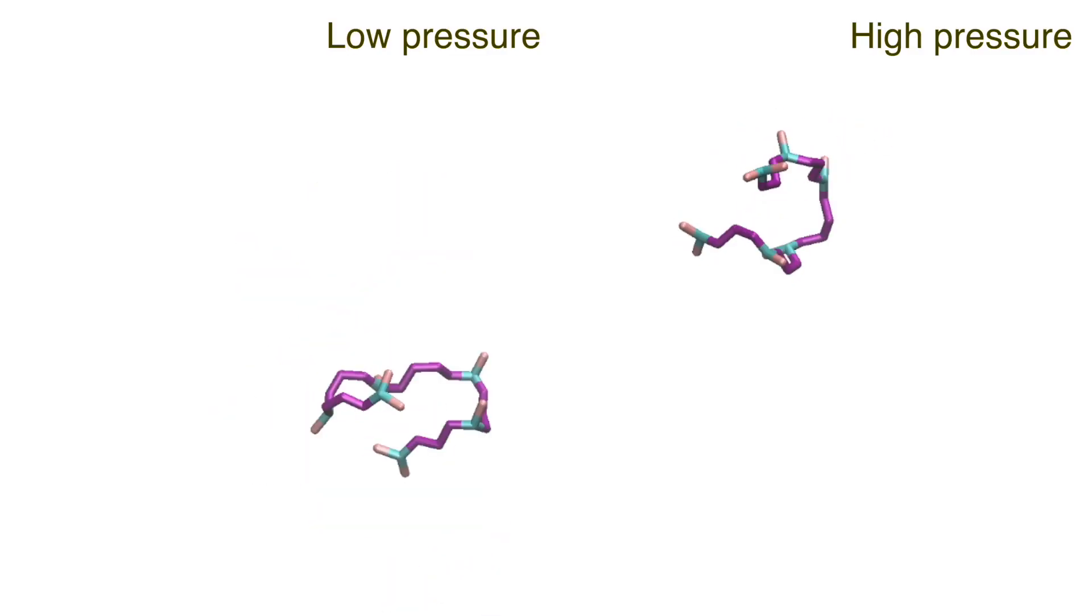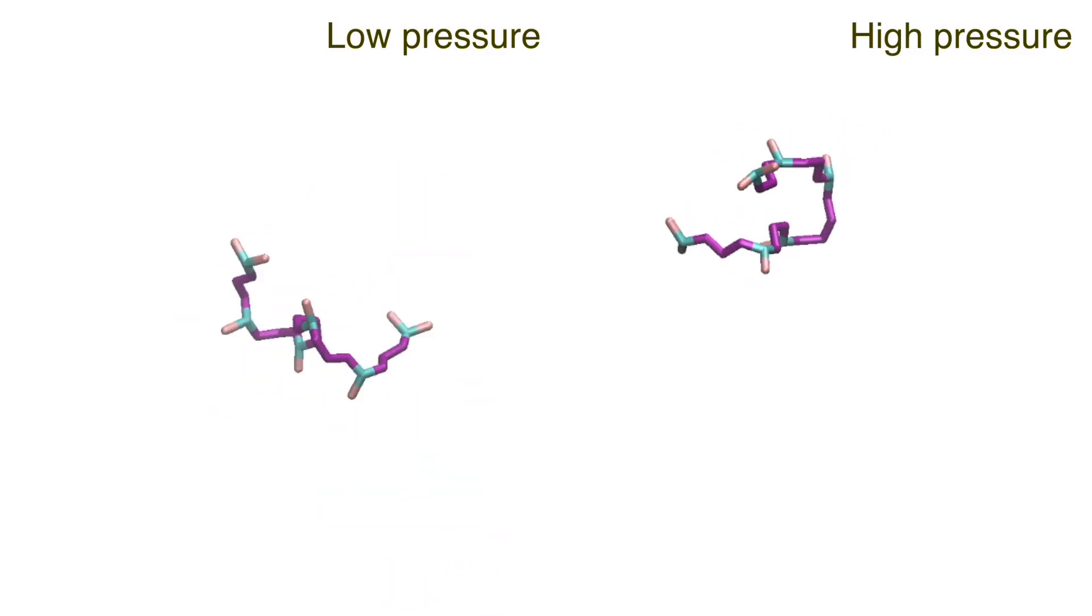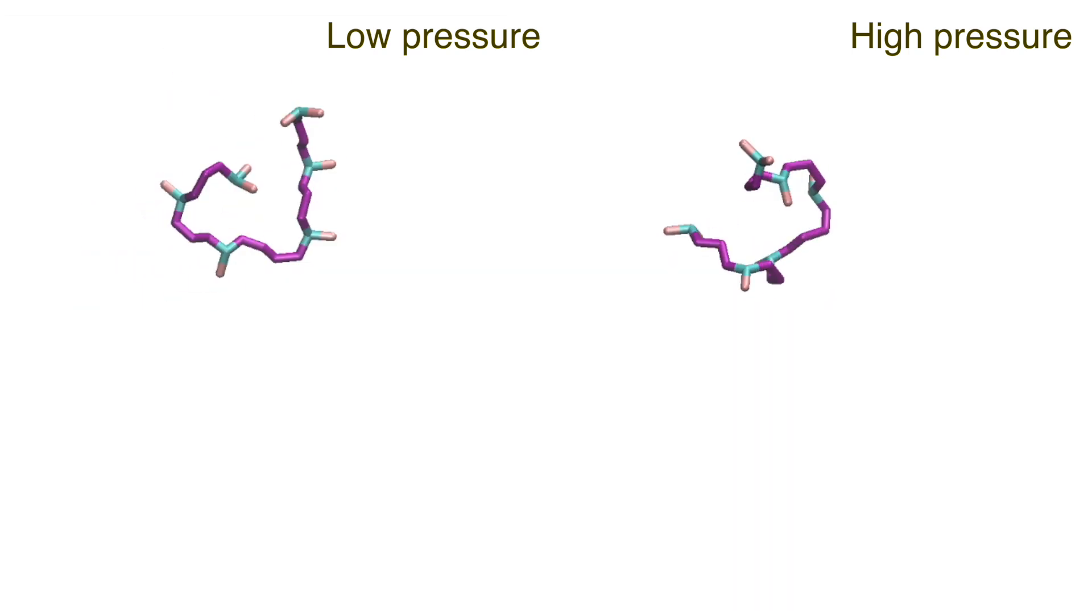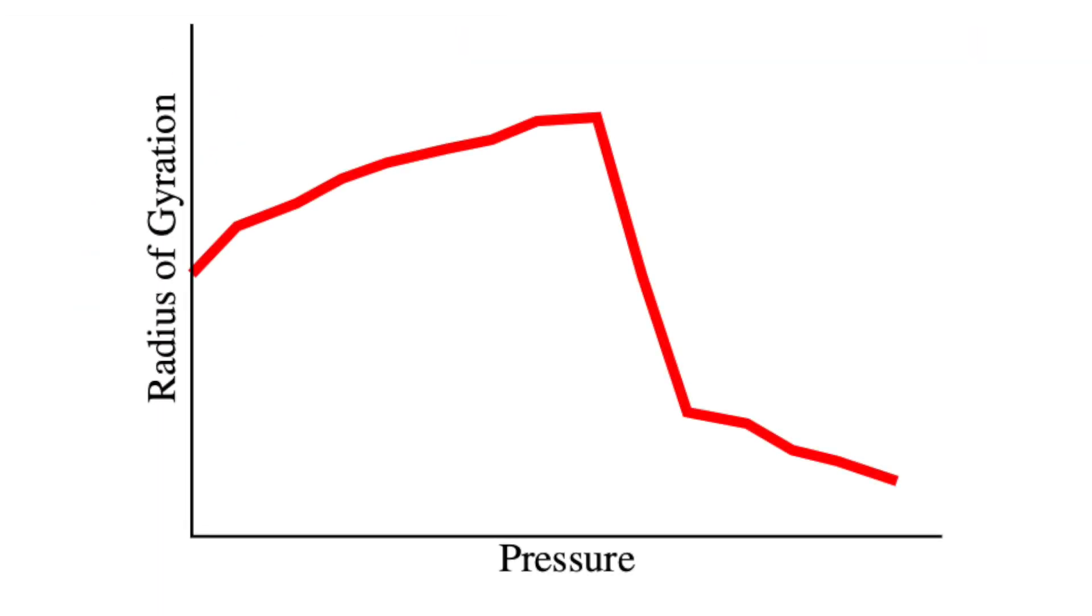At low pressures, the radius of gyration increases slowly due to the molecules all lining up and stretching out. At high pressure, the radius of gyration decreases dramatically, showing that the molecules are being crushed together and changing shape.